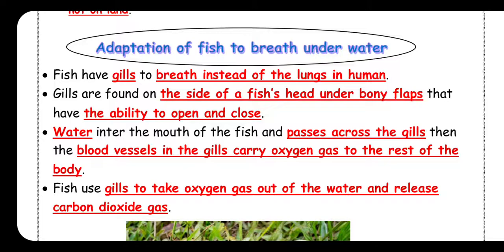Fish have something called gills. These gills help the fish to breathe. In humans, we all have lungs to breathe, but fish have gills instead of lungs. The gills have the same function as the lungs in humans.